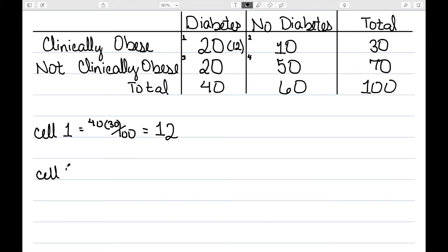For cell two, my column total is 60, my row total is 30, and we had 100 total observations. So this expected is 18. So I'll write my 18 here in parentheses.